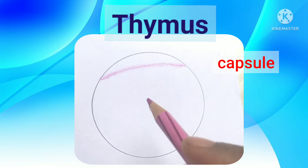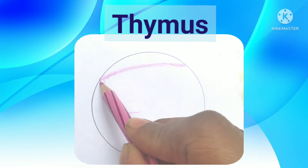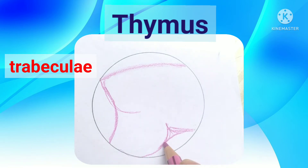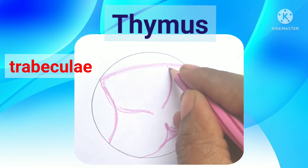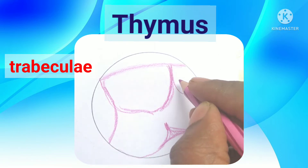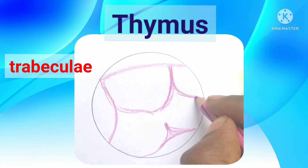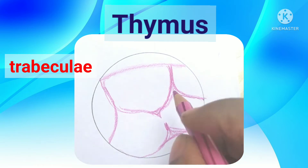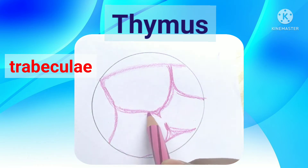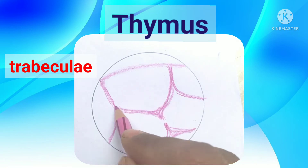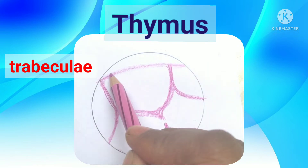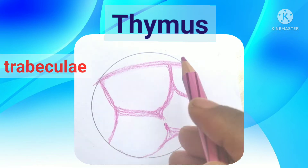The thymus is covered by a thin connective tissue capsule. The capsule sends septa inward called trabeculae, which divide the thymus into small lobules. The capsule and the trabeculae contain the blood vessels; the blood vessels don't enter into the lobules - they are present only in the trabeculae and the capsule.